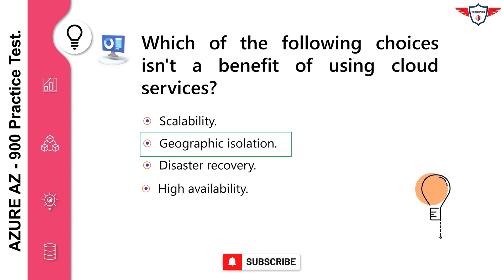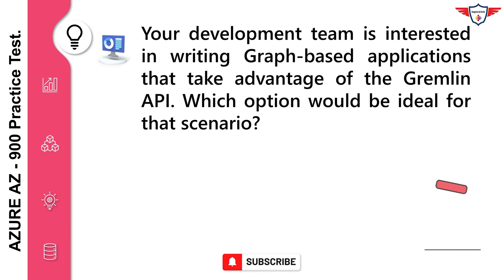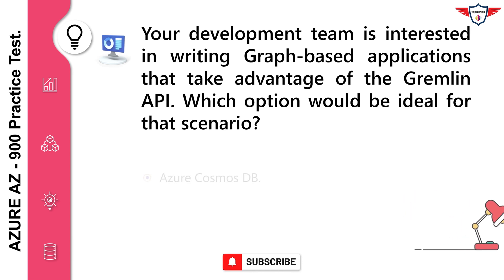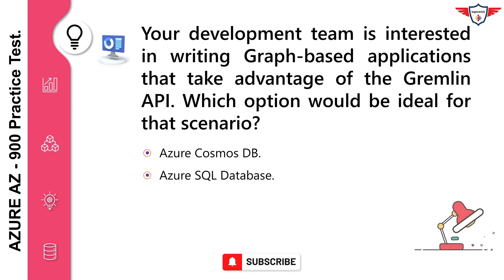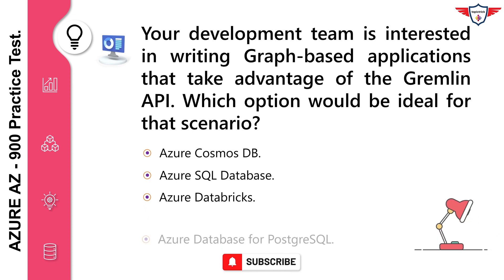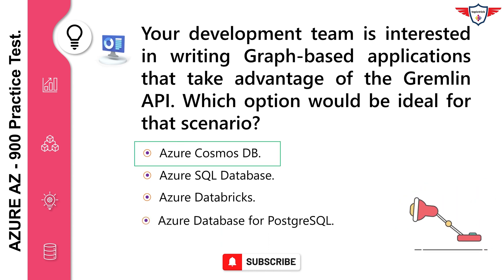Your development team is interested in writing graph-based applications that take advantage of the Gremlin API. Which option would be ideal for that scenario? Azure Cosmos DB, Azure SQL Database, Azure Databricks, Azure Database for PostgreSQL. The correct answer is Azure Cosmos DB. Azure Cosmos DB supports SQL, MongoDB, Cassandra, Tables, and Gremlin APIs.